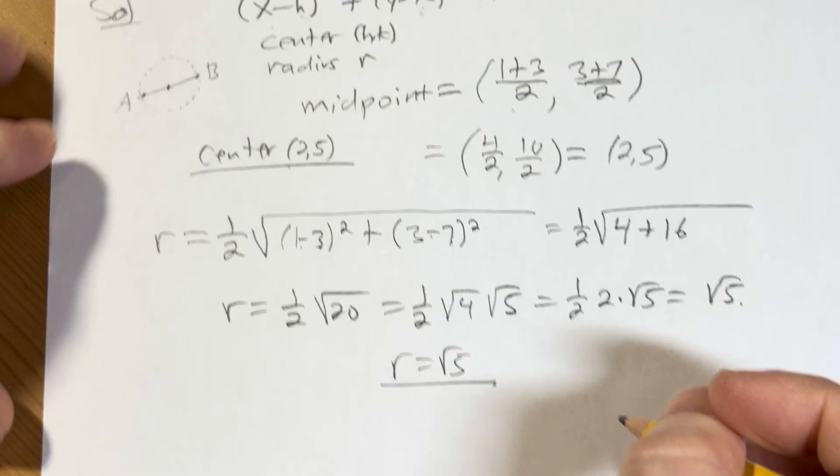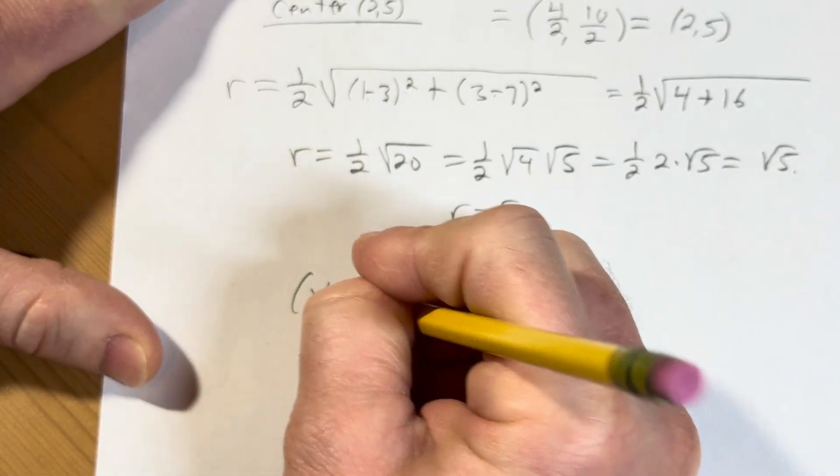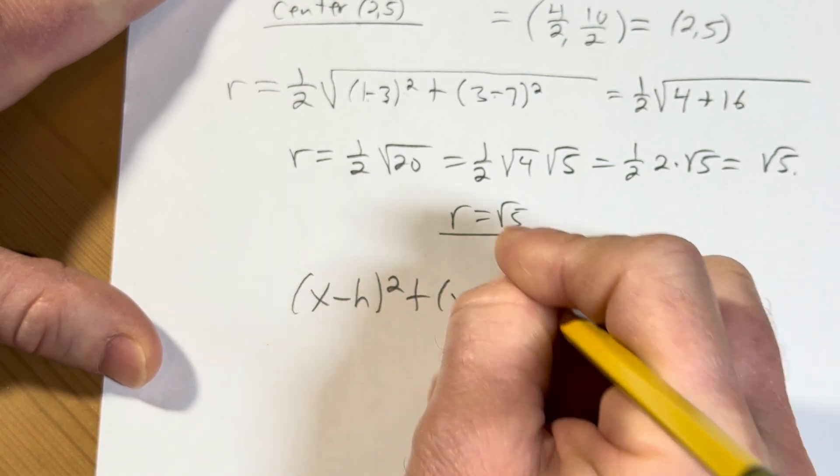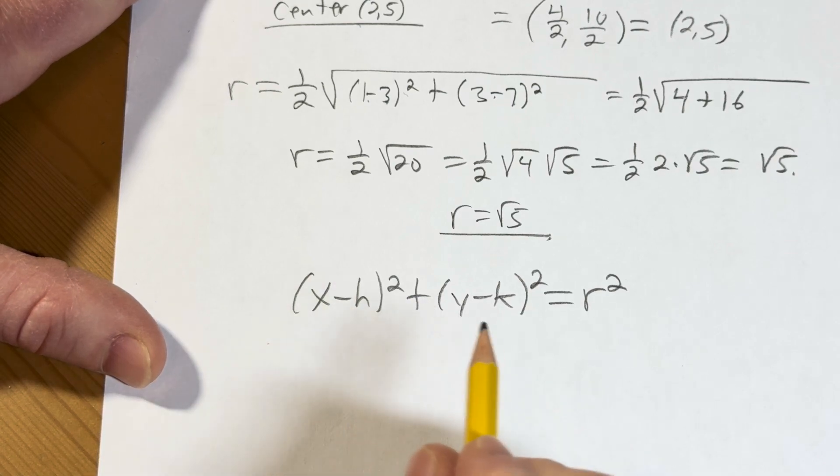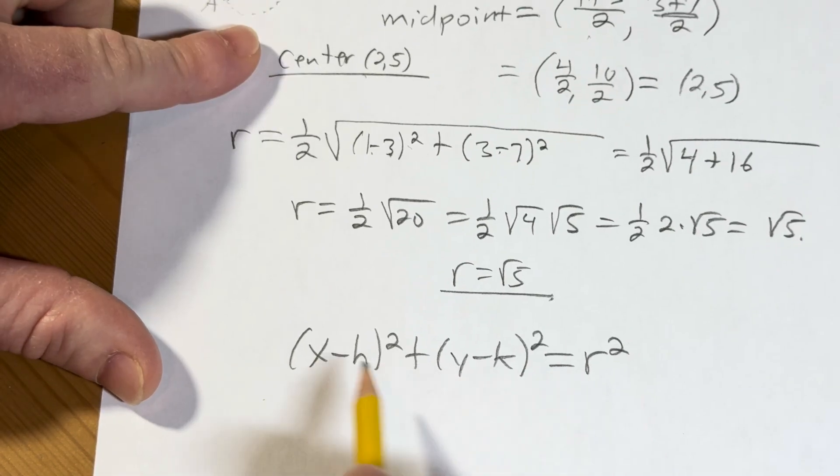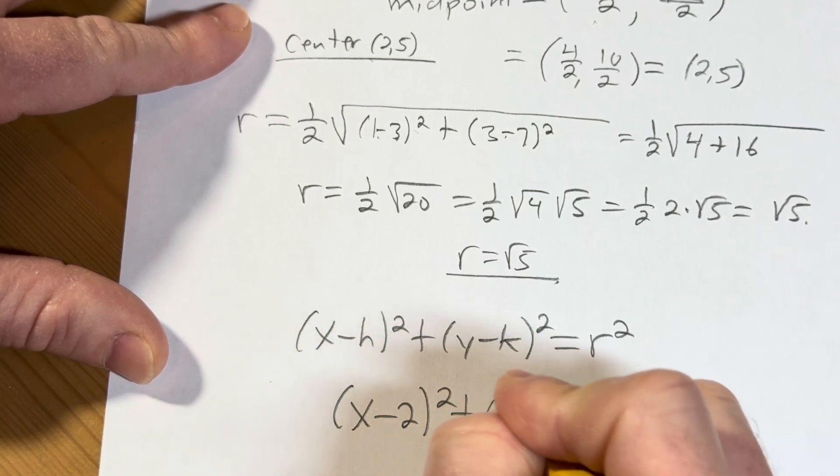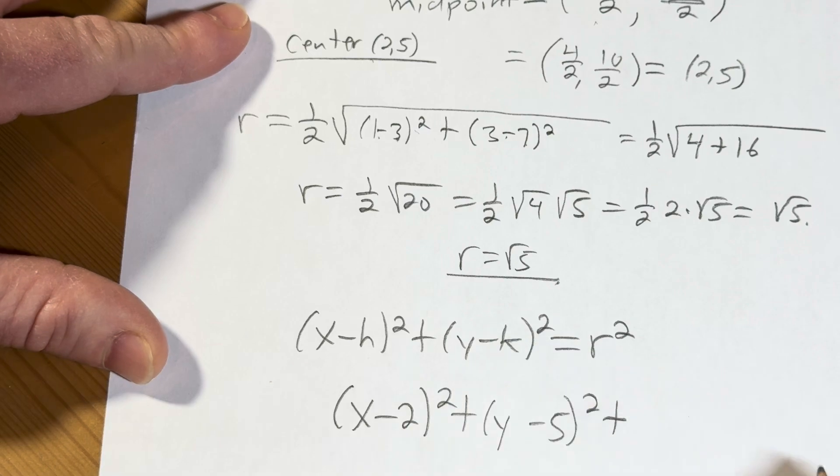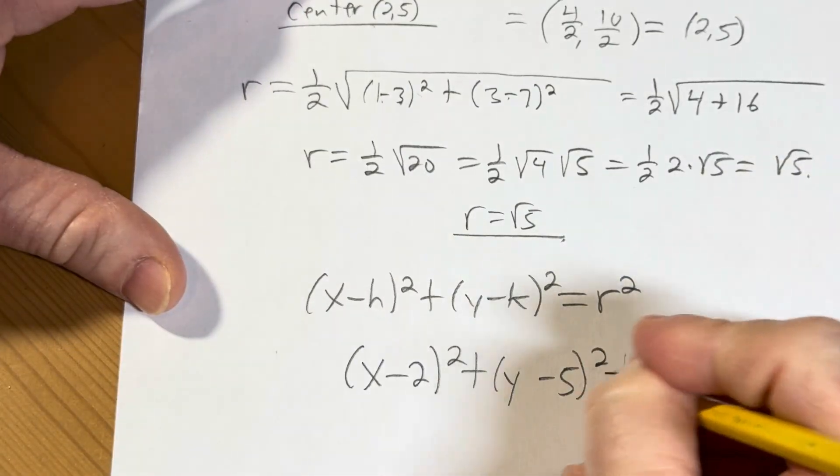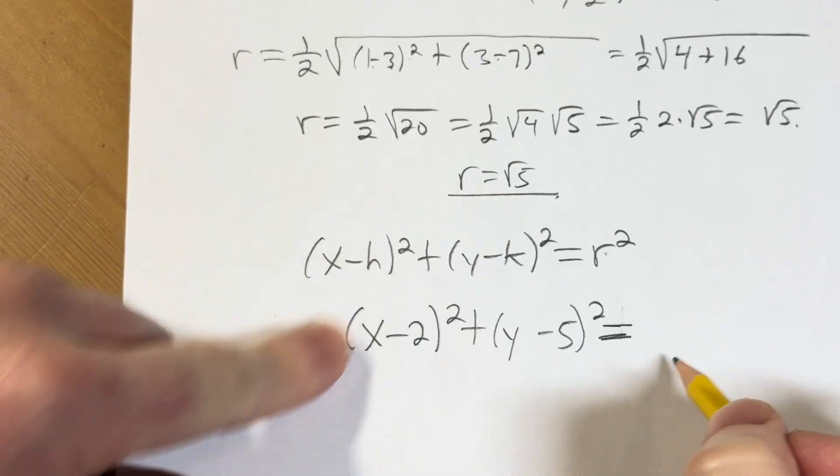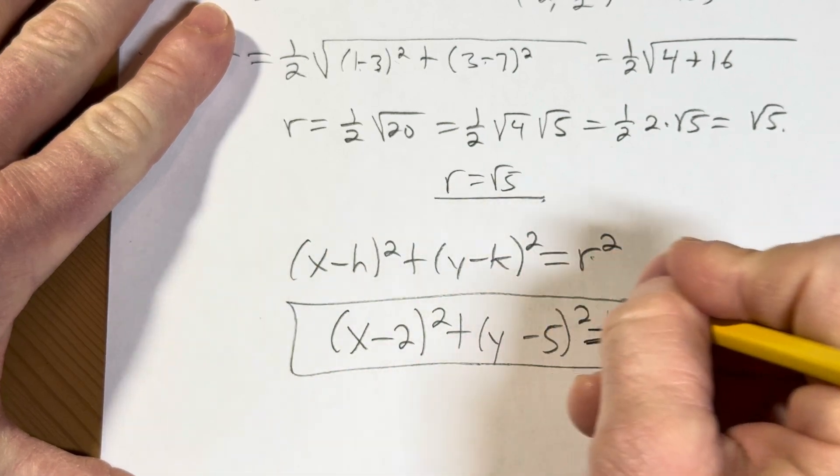So we've got r. We've got our center. Let's put it all together down here. So we have (x - h)² + (y - k)² = r². And we know that the center was (2,5). That's our h and our k. So it'll be (x - 2)² + (y - 5)² equals, and then here we have r, which is the square root of 5. When you square that, you get 5. And that, my friends, is the final answer.